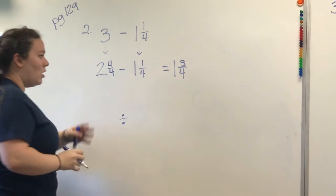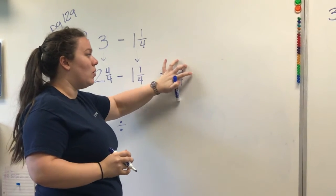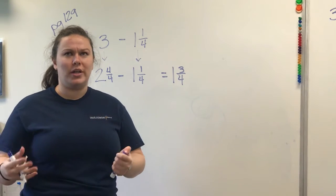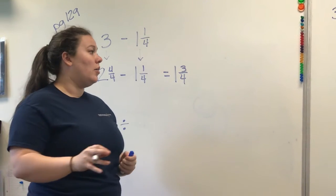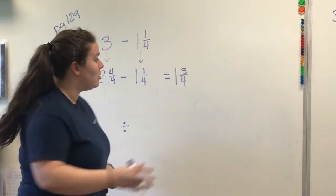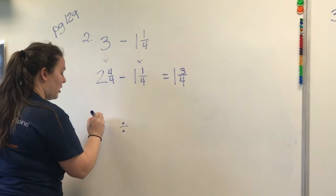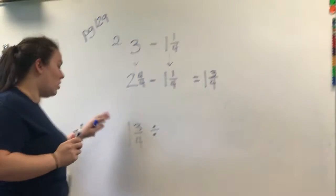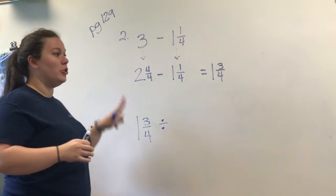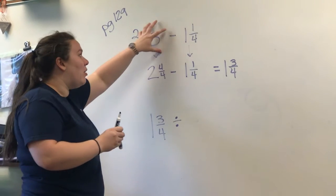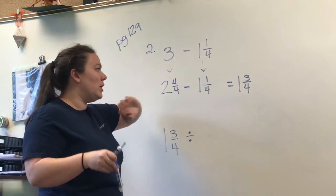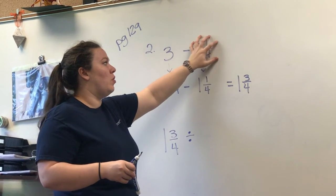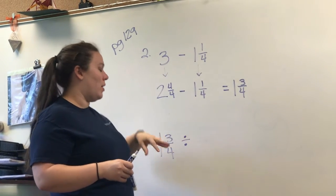Okay. This is now the total amount of yarn or string or ribbon, whatever she's using, that she wants to work with. So this is the total. And so we're going to put that in the front of our division problem. So one and three-fourths is your new total. She started out with three yards of ribbon, but she doesn't want to use all of that. So you had to take it away.